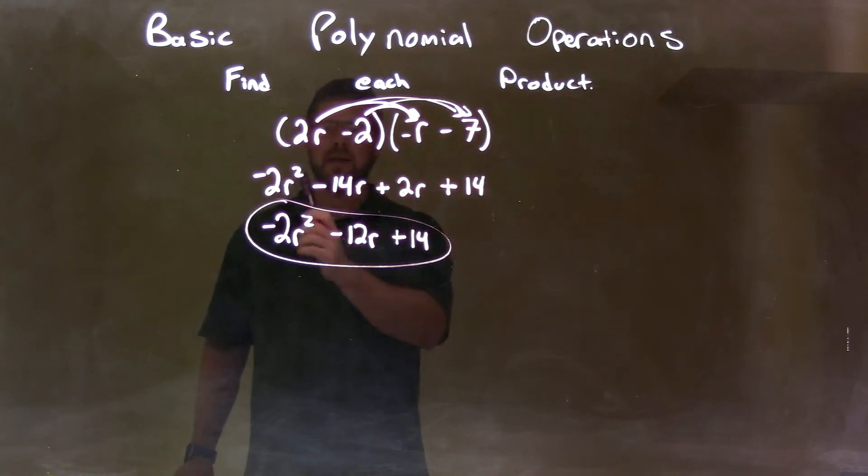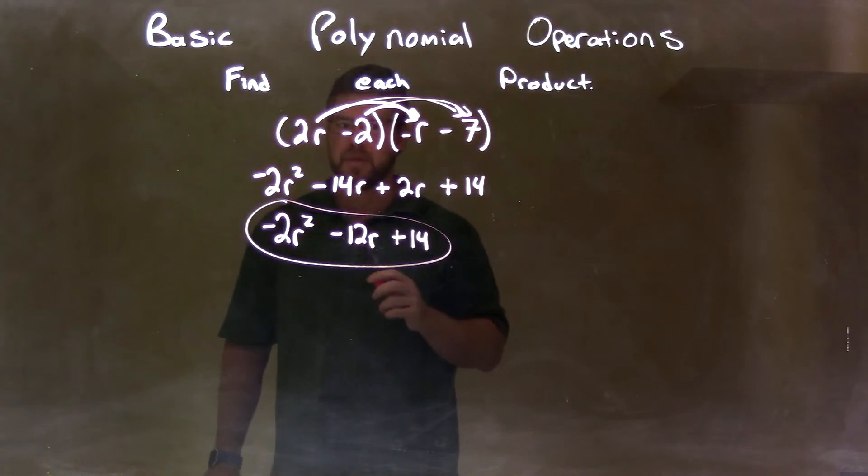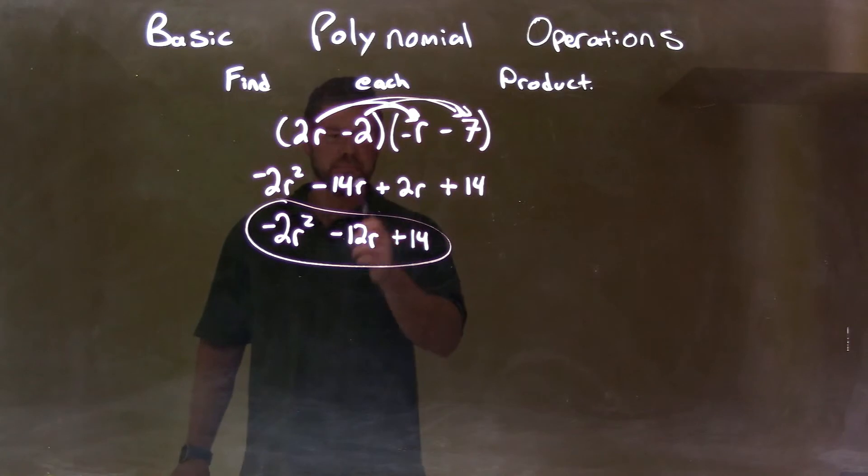We do that and we get negative 2r squared minus 14r plus 2r plus 14. We combine our like terms, minus 14r and 2r. With all of our like terms, that goes as negative 12r.